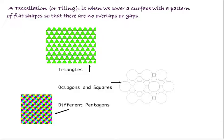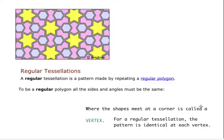There are different types of tessellations. So the first kind is a regular tessellation, and a regular tessellation is the pattern made by a repeating regular polygon pattern.